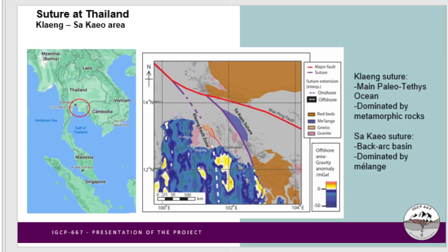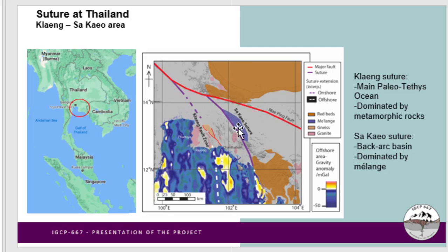Now we look at the local sutures from place to place, from Thailand to Indonesia regions. First we look at sutures in the Thailand Kanchanaburi and Sakaeo area. There are two sutures: the Kanchanaburi Fort Zone represents the main Paleotethys Ocean, dominated by metamorphic rocks shown in the orange area. The other is the Sakaeo suture, representing a smaller marginal or back-arc basin, dominated by mélange — a real chaotic rock package.